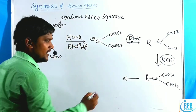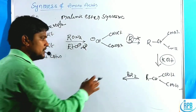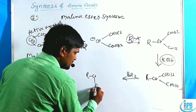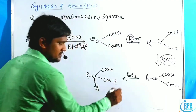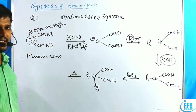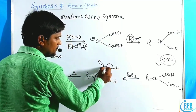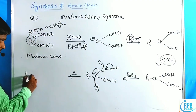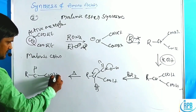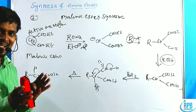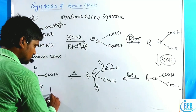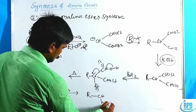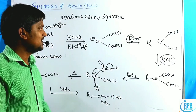The dicarboxylic acid then undergoes alpha bromination using bromine liquid to give the alpha-bromo dicarboxylic acid. On heating, one COOH group undergoes decarboxylation — the bonding electrons shift toward carbon, releasing CO₂ — giving the alpha halo carboxylic acid. Treatment of this with excess ammonia then gives the corresponding amino acid.